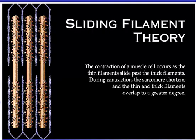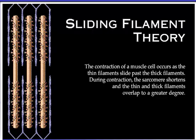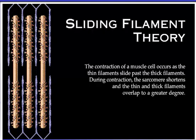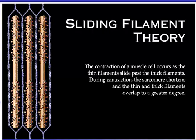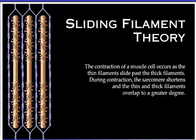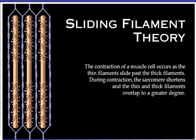The current theory of how a muscle cell contracts is the sliding filament theory, which states that the contraction of a muscle cell occurs as the thin filaments slide past the thick filaments. During contraction, the sarcomere shortens and the thin and thick filaments overlap to a greater degree.